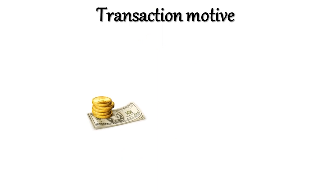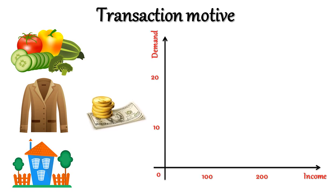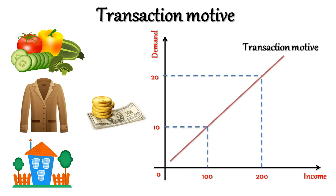The transaction motive relates to the need for cash for current transactions of personal and business exchanges. It is further divided into the income and business motives. There will be changes in the transaction demand for money depending upon the expectations of income recipients and businessmen. These depend upon the level of income, employment, and prices; the business turnover; the normal period between receipt and disbursement of income; the amount of salary or income; and the possibility of getting a loan.